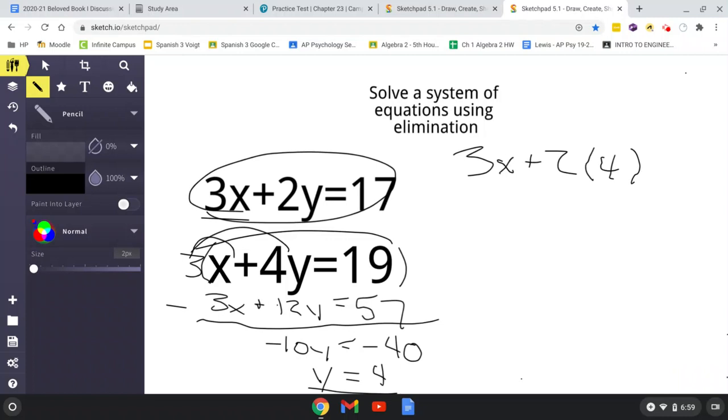because that's what y equals, substitute it in for y, equals 17. So 3x plus 8 equals 17, subtract the 8, 3x equals 9, x equals 3.